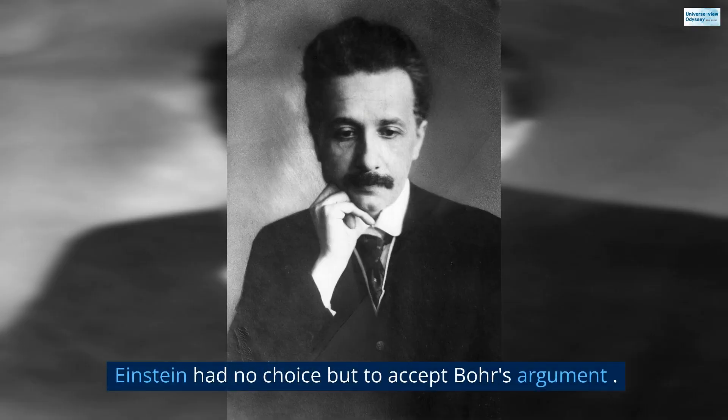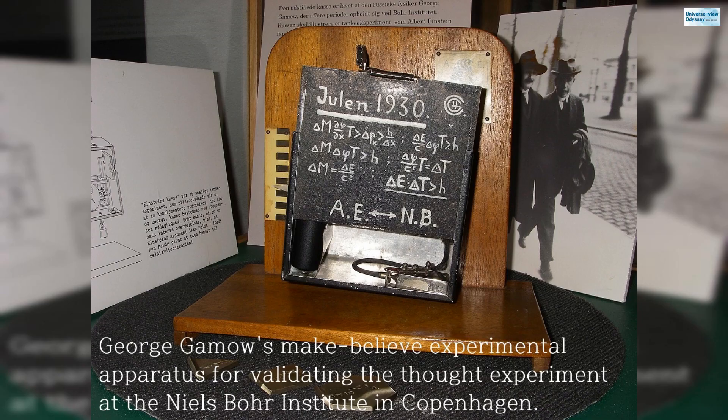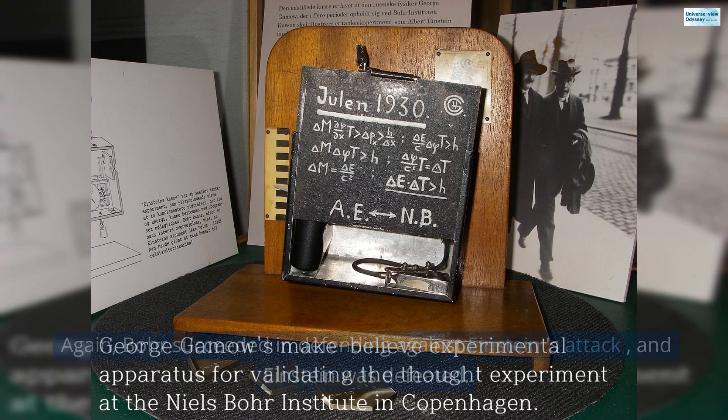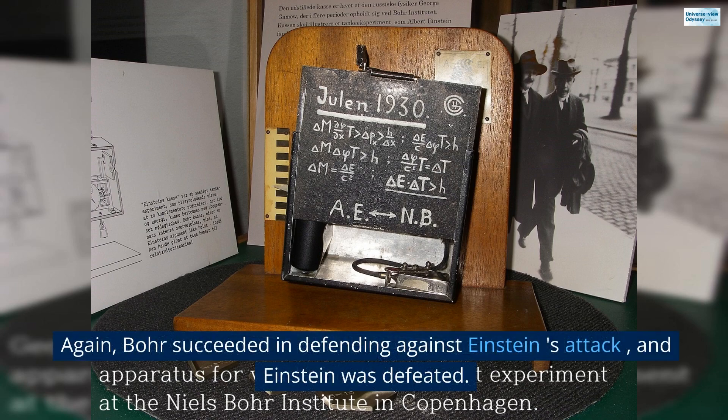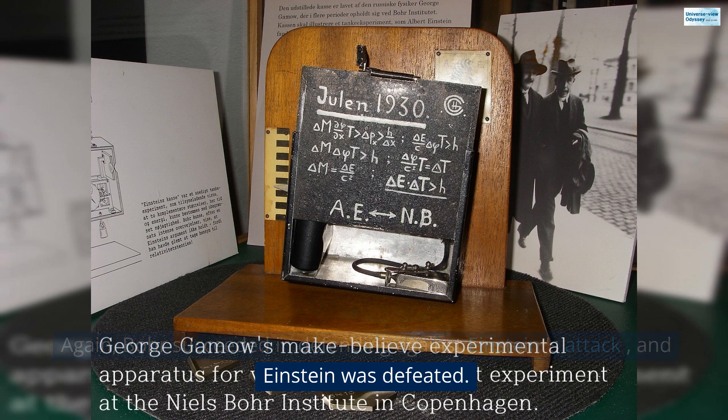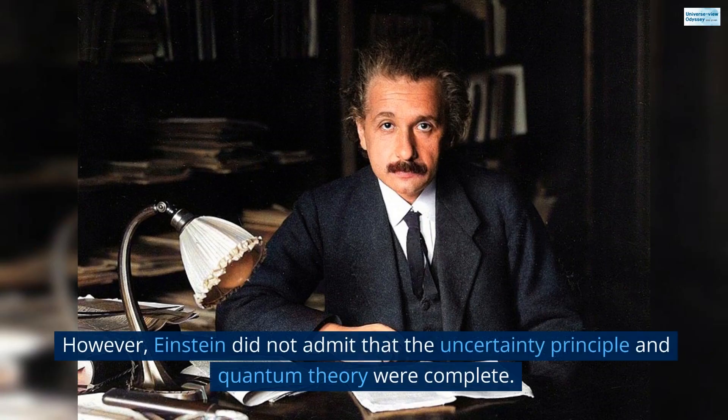Einstein had no choice but to accept Bohr's argument. Again, Bohr succeeded in defending against Einstein's attack, and Einstein was defeated. However, Einstein did not admit that the uncertainty principle and quantum theory were complete.